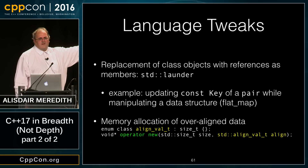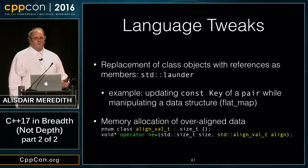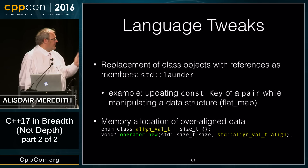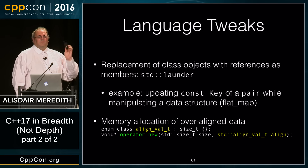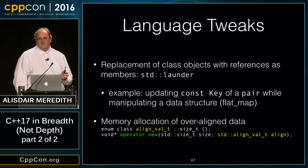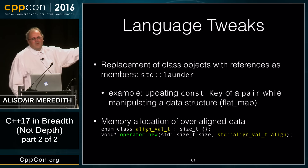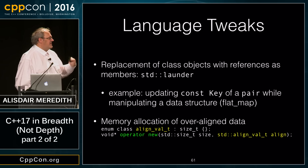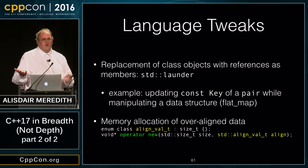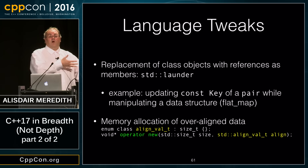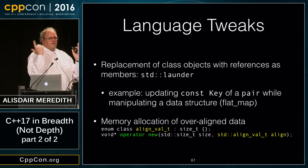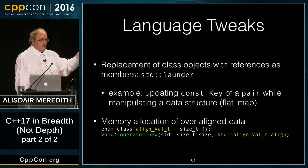std::launder says we're about to do something unusual — the compiler is not allowed to optimize on the assumption that it wasn't permitted. If you never hit those corner cases, you're in the 99.5% of C++ developers who'll never need this. But for data structures like a flat_map where you need to swap pairs with const keys, you'll need std::launder to keep things well-defined.